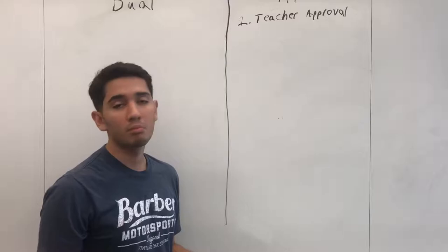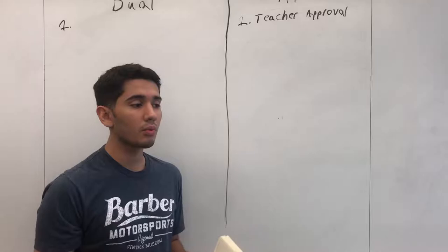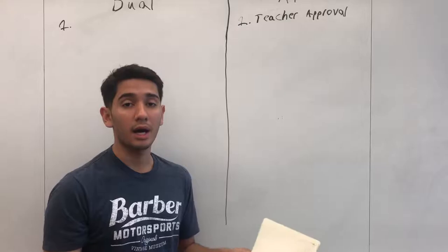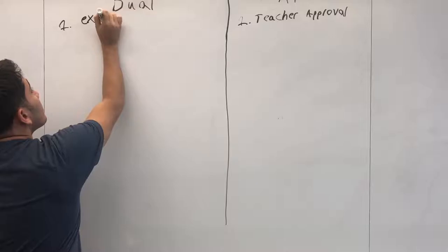Now for dual enrollment it's a bit different. For dual enrollment, basically what you need to do is - at least for my school - once you were a sophomore in high school you could take an exam and you had to pass it to be able to take dual enrollment. So it's basically just going to put it here: exam required.